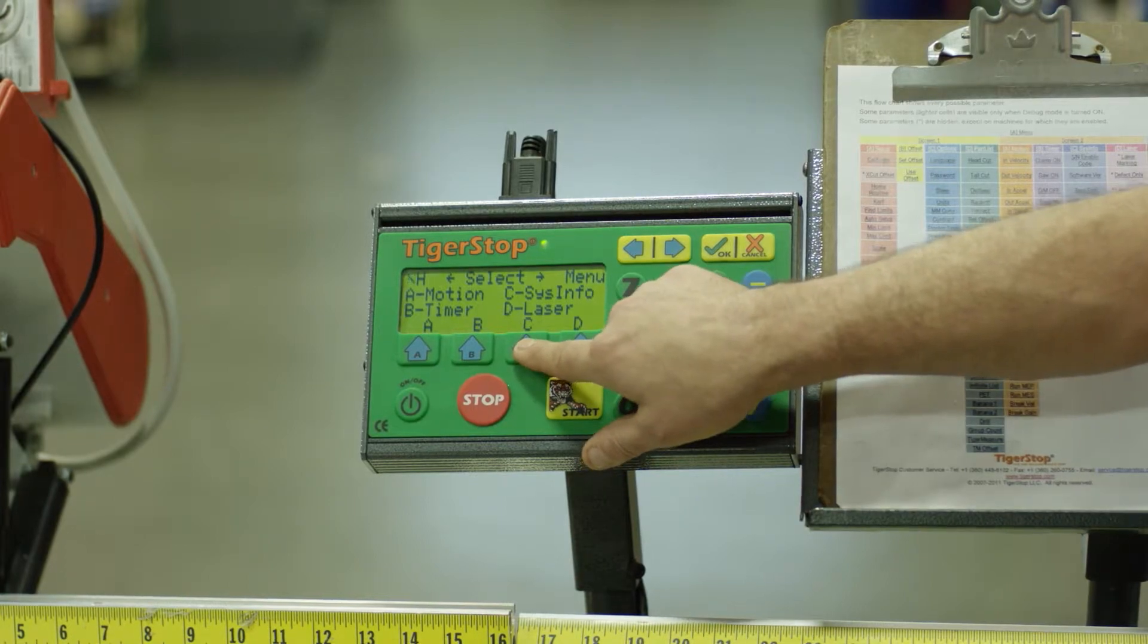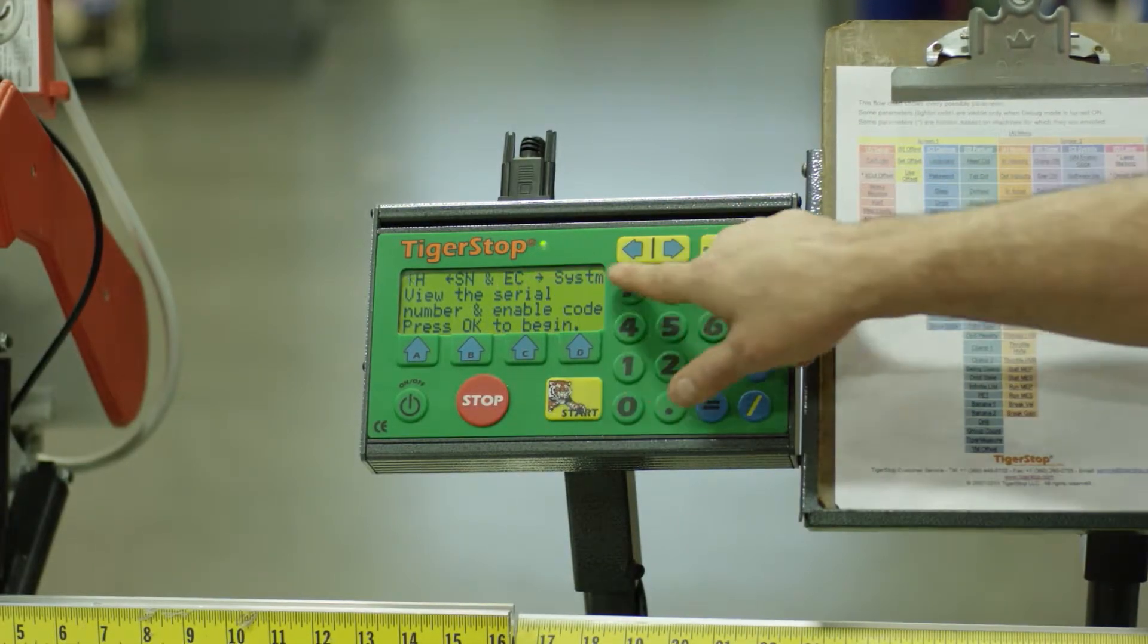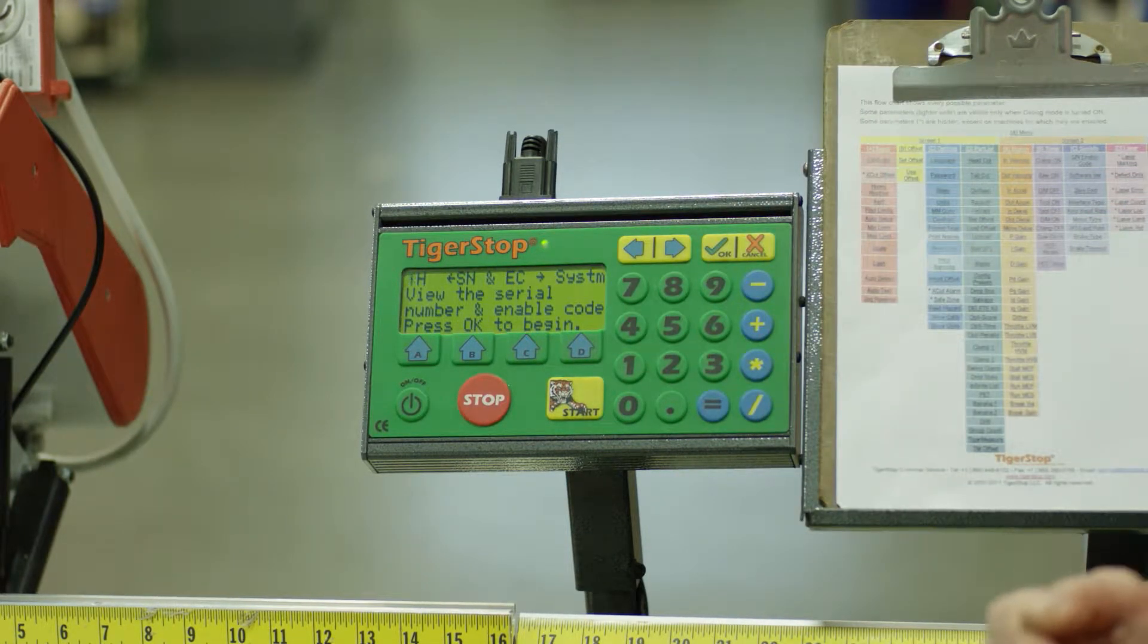It is located under the system info. To access that particular part of the menu, I press C. And now what I'm seeing is the various information that is listed under that C in screen number two, menu number two.